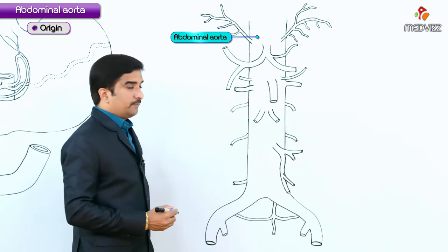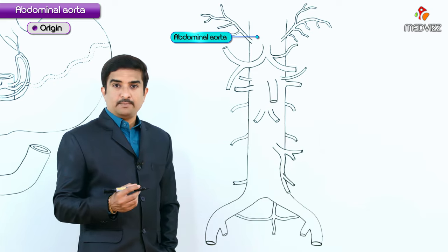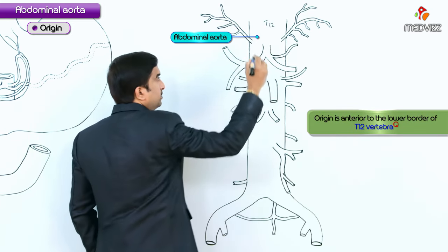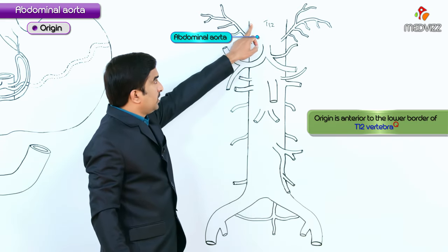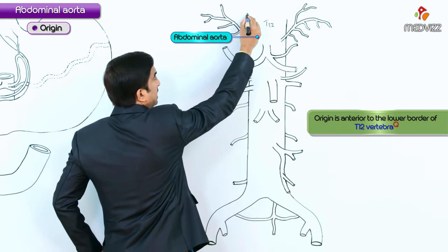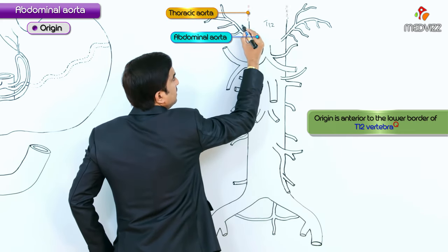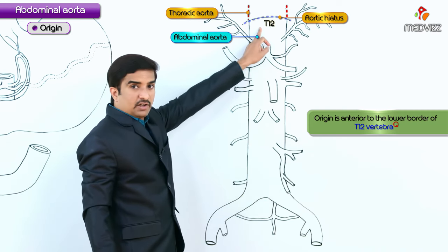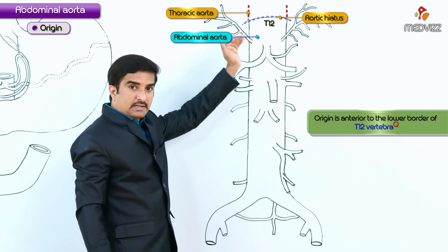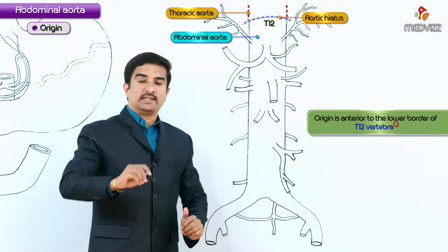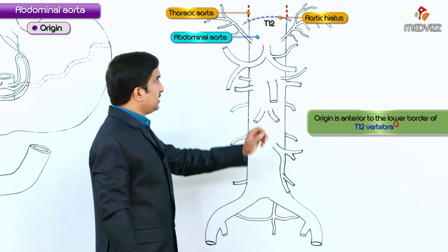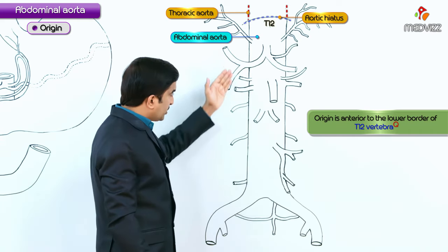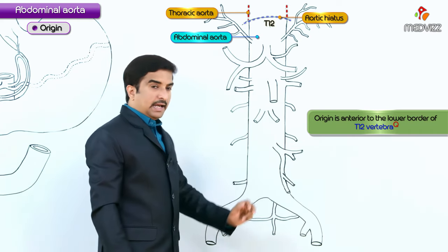The origin of the abdominal aorta is anterior to the lower border of the T12 vertebra. The dotted line represents the thoracic aorta, and from the aortic hiatus of the diaphragm the abdominal aorta continues downwards into the abdominal cavity. So the origin is at the T12 vertebra.